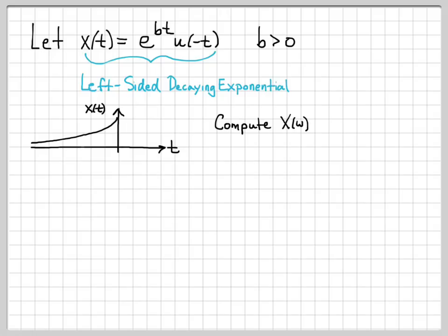What we are going to do is compute x of omega, which is the Fourier transform of x of t. We're going to use the definition of the Fourier transform.